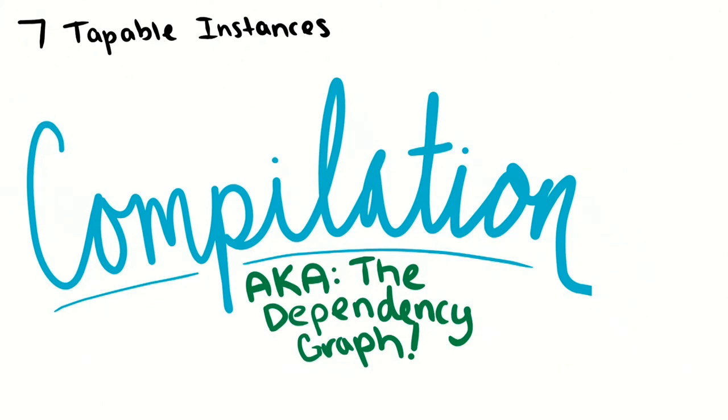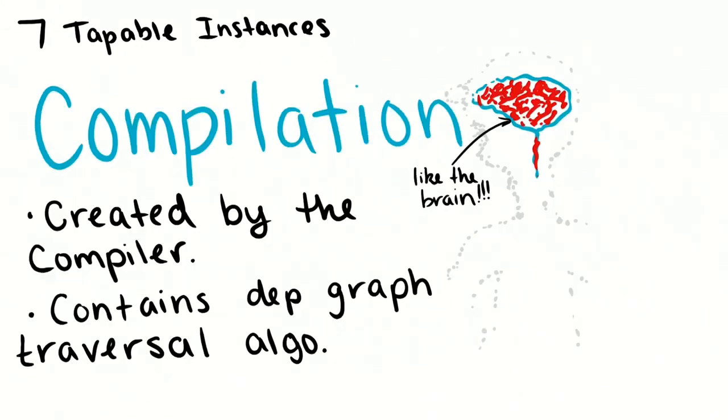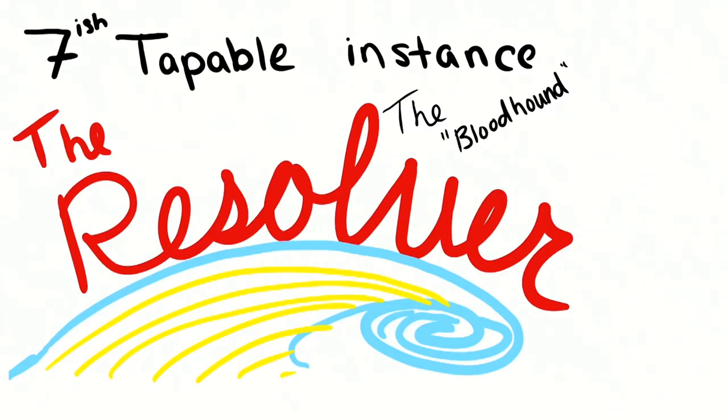The next tappable instance is called the compilation. A compilation in technical terms is the result or product of a compiler. But in our case, I just like to say, it's everything about the dependency graph. It is the main, it contains all of the most resource intensive processes within Webpack. It's created by the compiler, and it has what we call the dependency graph traversal algorithm. Stop using these large terms. Basically, it's responsible for finding all of the files that you're using in your code base.